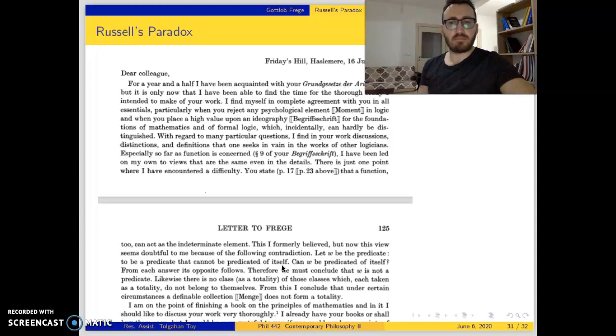All those predicates that cannot be predicated of themselves fall under W. Can W be predicated of itself? From each answer its opposite follows. There we have the contradiction.